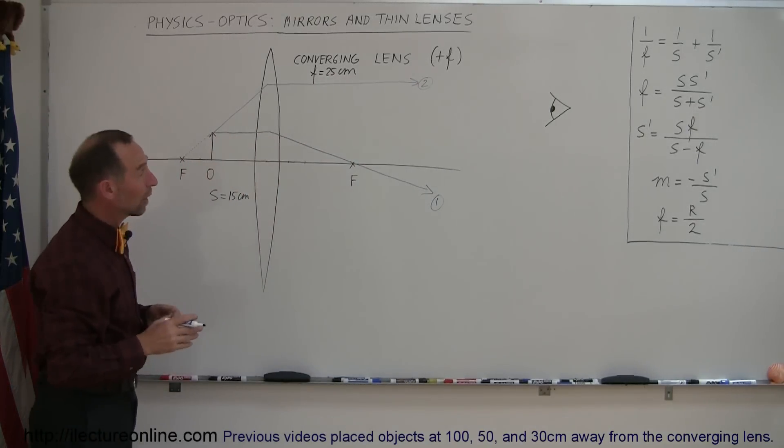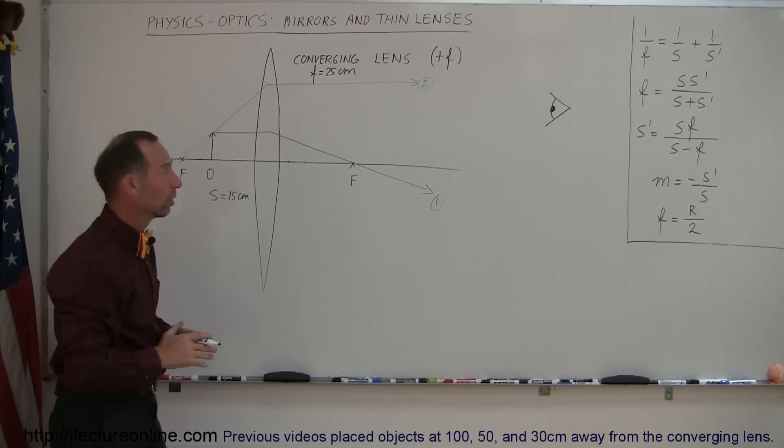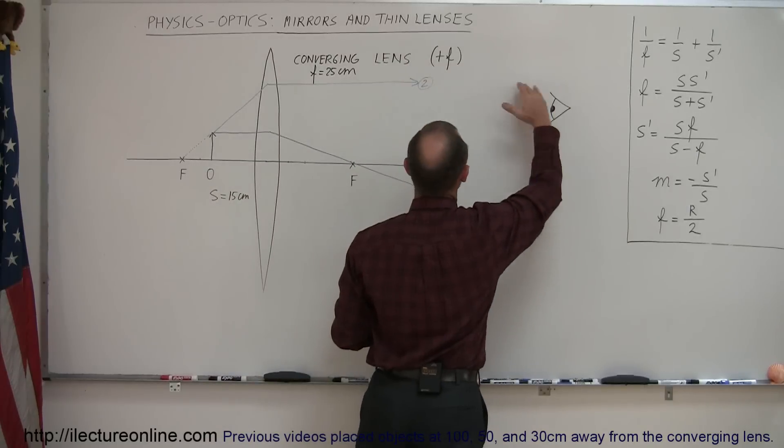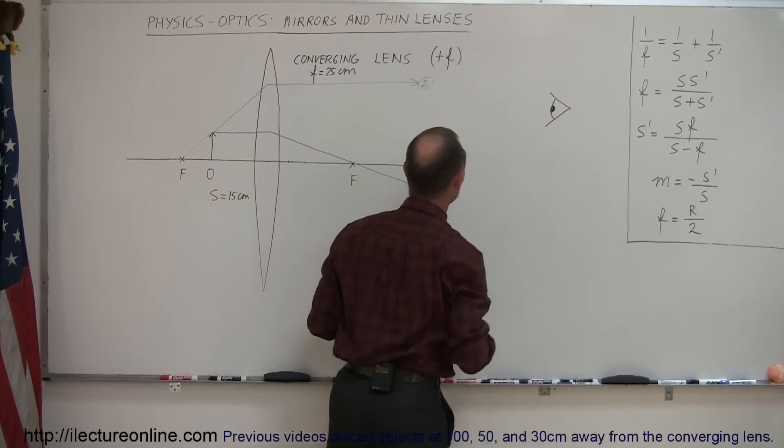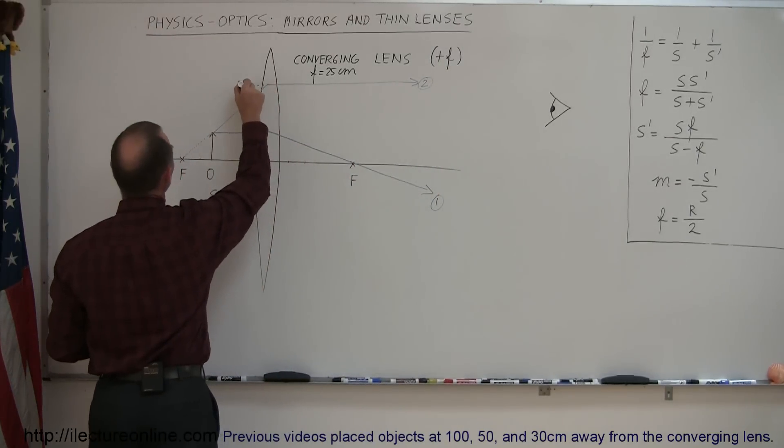Now, you can see that those two rays do not converge. They do not come together behind the lens. They do not form a real image. But the observer on the other side of the lens sees those two rays coming in these directions. The brain kicks in, says, oh, I know where they came from. This one came from back here somewhere.